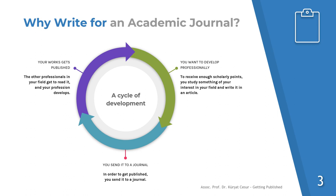You want to write for an academic journal for your own professional development, to receive enough scholarly points, as well as for the development of your own profession. Since the studies you share create a new perspective or develop the ones already known so that future research can find its way — it's a cycle of development. If you develop yourself professionally, you send an article, it gets published, your profession develops, and then you develop again.